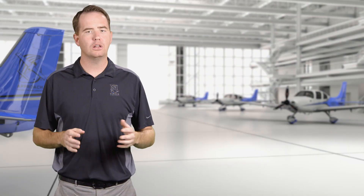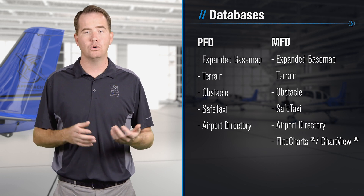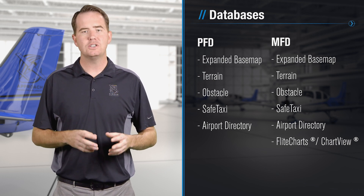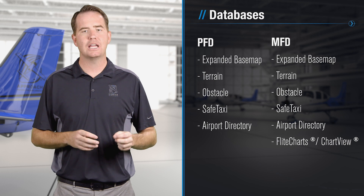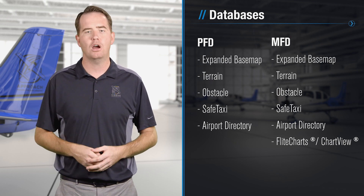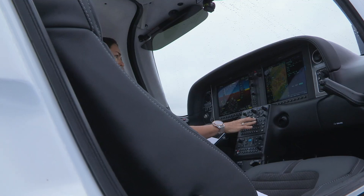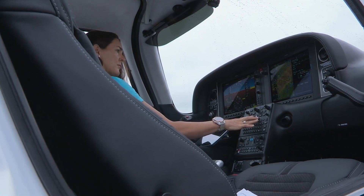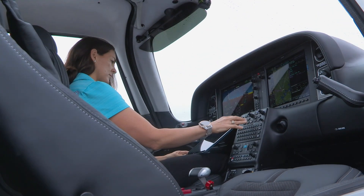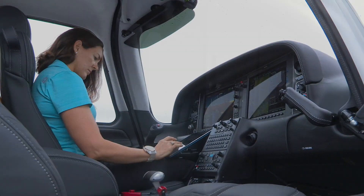Although not all of the databases are used by each display — for example, charts are only needed on the MFD card — it's often just as easy to transfer all of the supplemental databases onto both cards, letting those displays use the data that they need. Plus, if you're ever troubleshooting a problem on the road, it might be handy to have two complete copies of your supplemental databases.